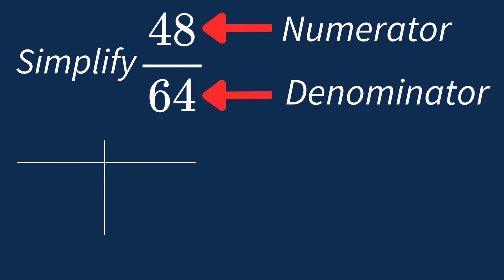First, let's list out the factors for each. For 48, the factors are 1, 2, 3, 4, 6, 8, 12, 16, 24, and 48.